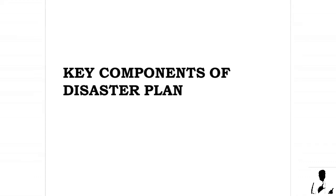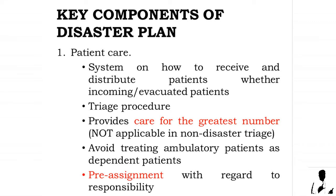The key components of a disaster plan include: first, patient care. As nurses, you should know the following to cater to patients effectively and efficiently — a system on how to receive and distribute patients, whether incoming or evacuated; triage procedures that provide care for the greatest number, which is not applicable in non-disaster triage; avoiding treating ambulatory patients as dependent patients; and pre-assignment with regard to responsibility.